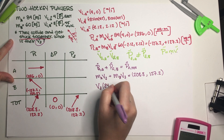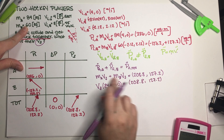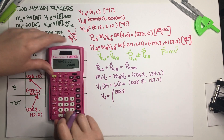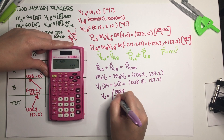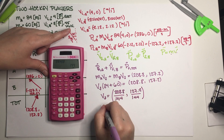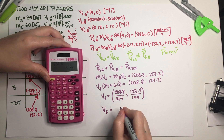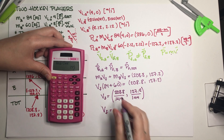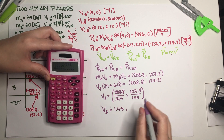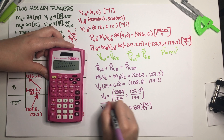Carrying out the division: 208.8 divided by 144 gives 1.45 on the x-axis, and 127.2 divided by 144 gives 0.88 on the y-axis. So the final velocity vector is (1.45, 0.88) meters per second.